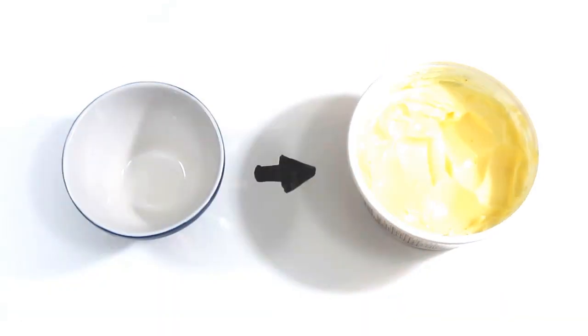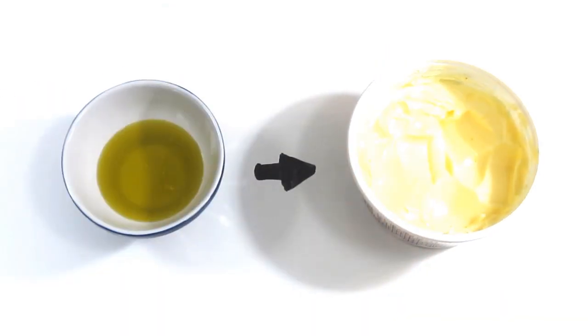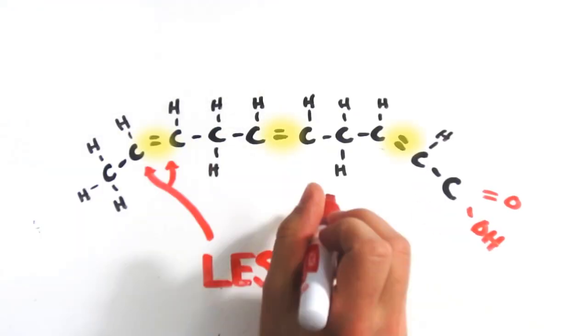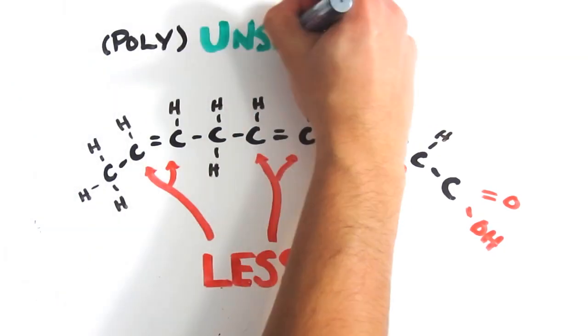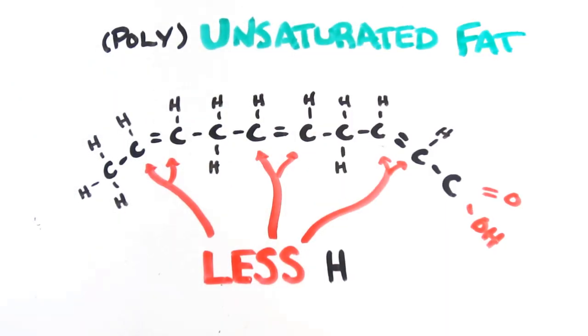Margarine, on the other hand, is created primarily from plant oils which have a similar but different chemical composition. The carbons double bond with each other so that fewer hydrogen can fit, and we call this unsaturated fat. So far, so good. A similar tasting substitute with less saturated fat, right?